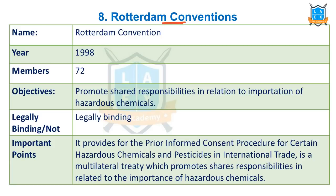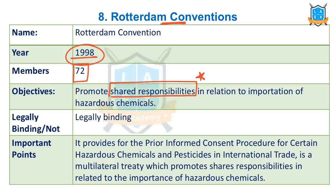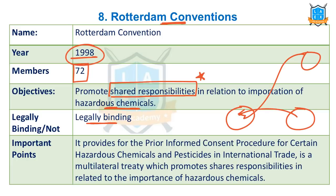The next important convention is the Rotterdam Convention, effective from 1998. There are 72 member countries. This promotes shared responsibility in relation to the import of hazardous chemicals. It is legally binding. There is a prior informed consent procedure for certain hazardous chemicals — for example pesticides. They need prior information on what purpose they will be used for. This way, the Rotterdam Convention provides rules for the shared responsibility of buyer and seller.